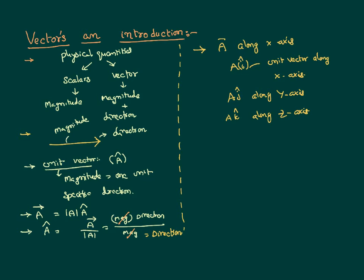So we use terms i, j, and k to identify the direction of a given vector. Typically, i-cap says the vector is along the x-direction, j-cap says the vector is along the y-direction, and k-cap says the vector is along the z-direction. As we said, a vector has both magnitude and direction — magnitude is the size, and direction is indicated with i-cap, j-cap, and k-cap, corresponding to the x-axis, y-axis, and z-axis respectively.